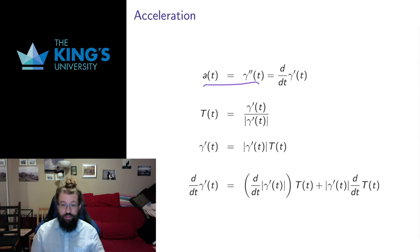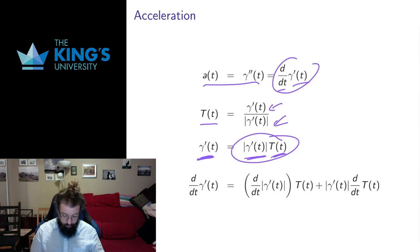Acceleration by definition is the second derivative of position. I can write this as the derivative of velocity. The vector T, the unit tangent vector, is defined to be the tangent divided by its length. So I can think of the derivative of gamma as its length times the unit tangent T. If I rearrange this equation, I can take this derivative and treat it as a product rule derivative. I take the derivative of the first times the second, plus the first times the derivative of the second, and see if this gives me any insights into what's going on.